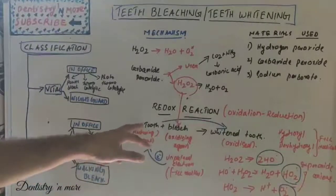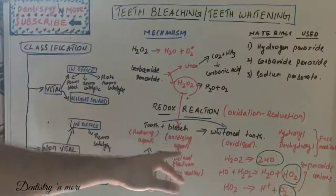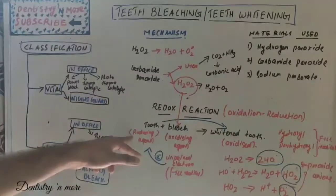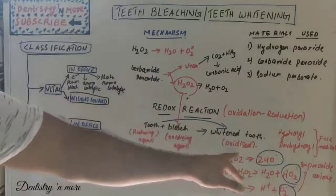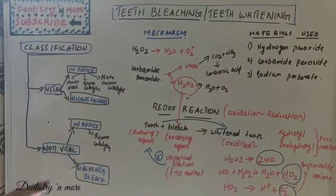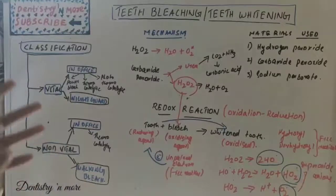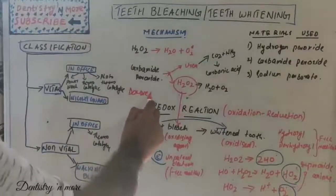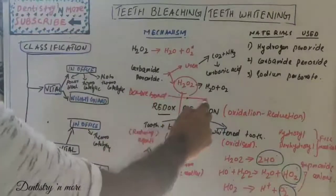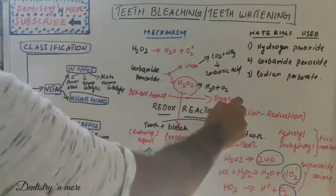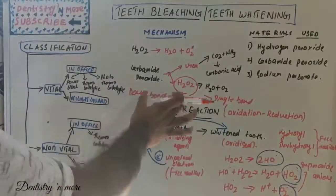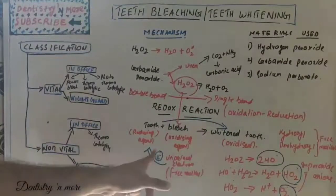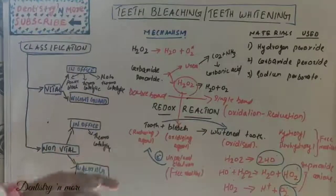These unpaired electrons are donated to the reducing agent, which is the tooth. The oxidizing agent donates free radicals to the reducing agent, which becomes oxidized. The tooth has chromogenic pigments with double bonds; these double bonds are converted to single bonds. A double bond produces a darker shade, and a single bond produces a lighter shade — that is the oxidation reaction occurring on the tooth surface.